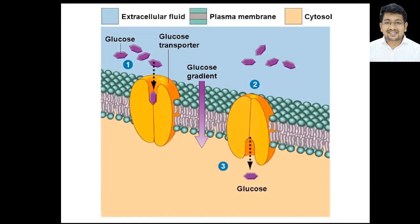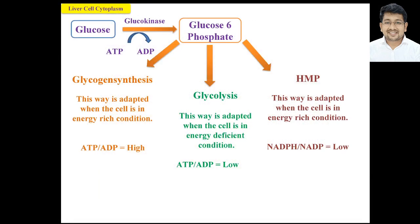Once glucose enters the blood, it circulates throughout the body. From blood it diffuses to the tissue fluid, and as its concentration in tissue fluid increases, glucose is transported from extracellular fluid to the cytosol with the help of GLUT transporters. These GLUT transporters mediate facilitated diffusion of glucose from high to low concentration and can mediate transport both from outside the cell to inside and from inside to outside, depending on the concentration gradient.